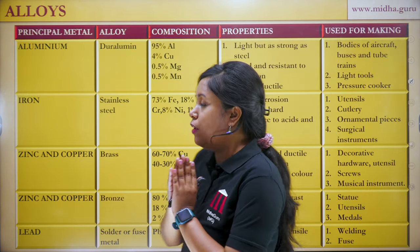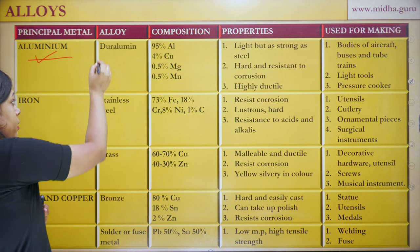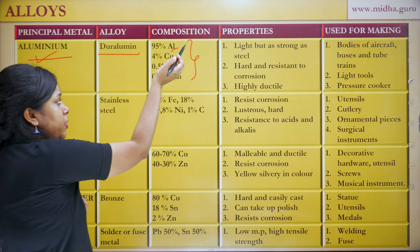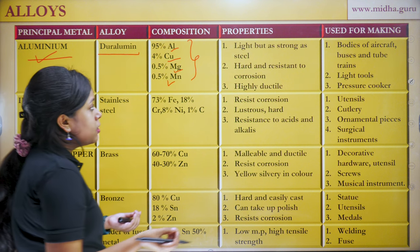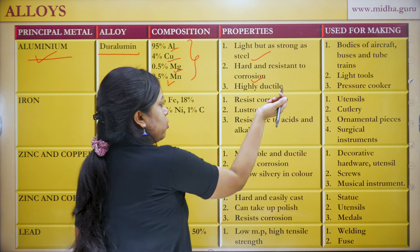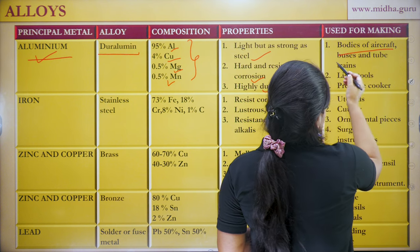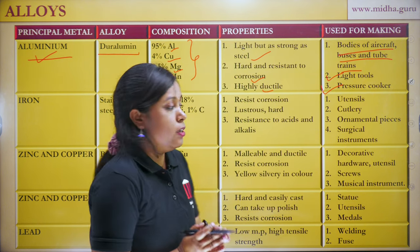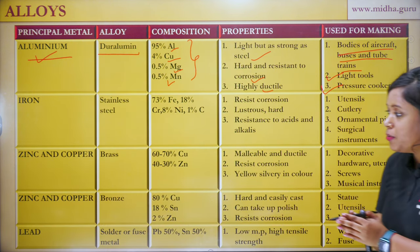Here are some examples of alloys. The principal metal aluminium forms an alloy called duralumin, with composition 95% aluminium, 4% copper, 0.5% manganese, and 0.5% magnesium. Its properties are: lighter but as strong as steel, hard and resistant to corrosion, highly ductile. It is used in aircraft bodies, buses, tubes, trains, light tools, and pressure cookers. You should take a screenshot of these alloy examples as they can directly come in your exam.